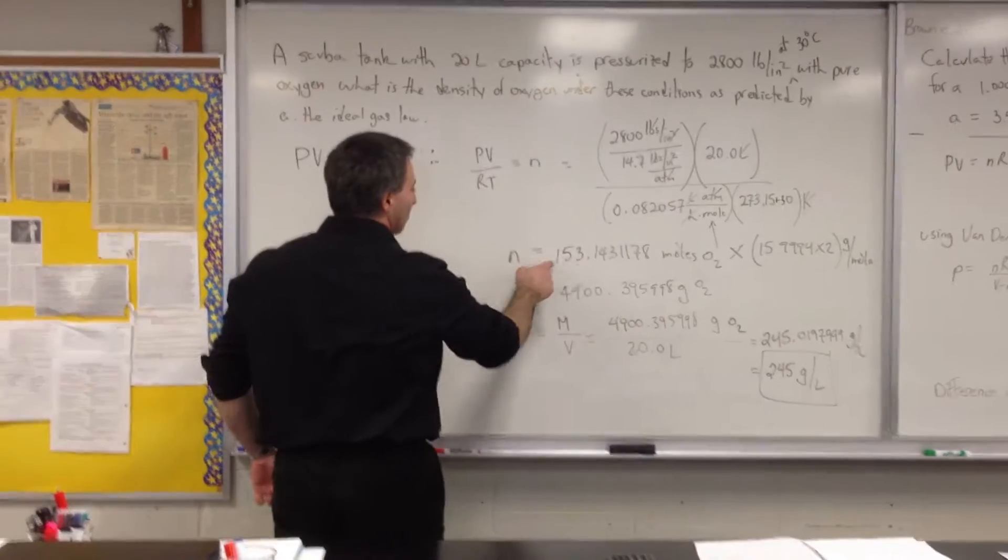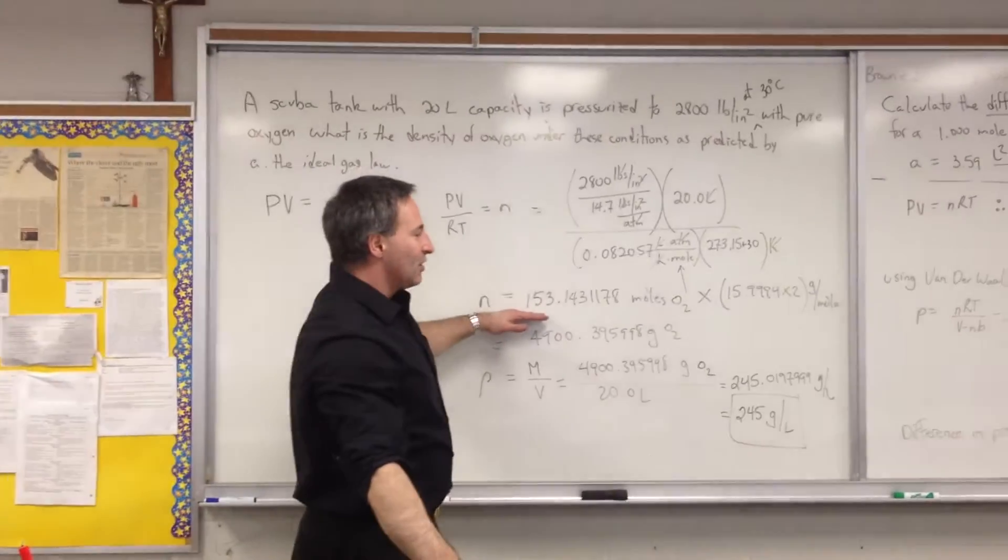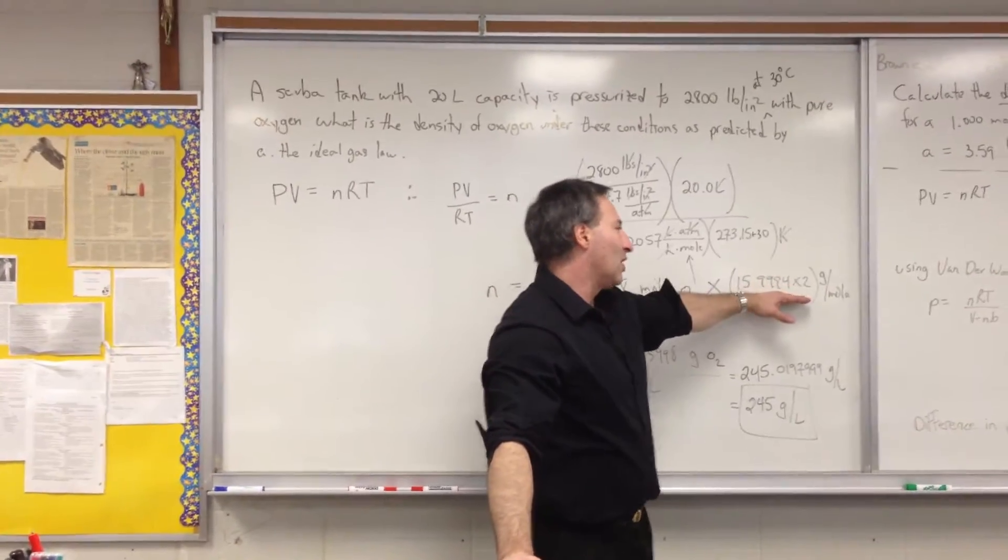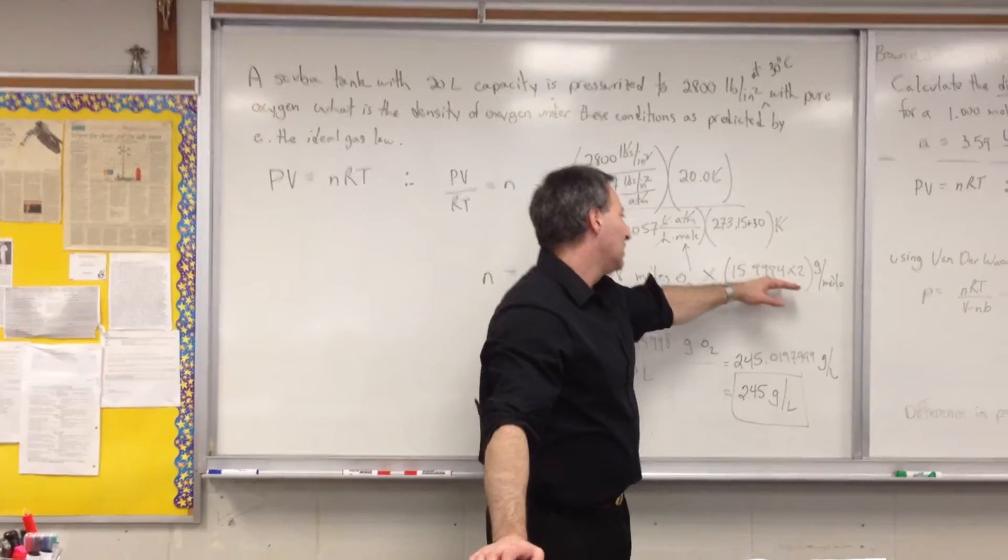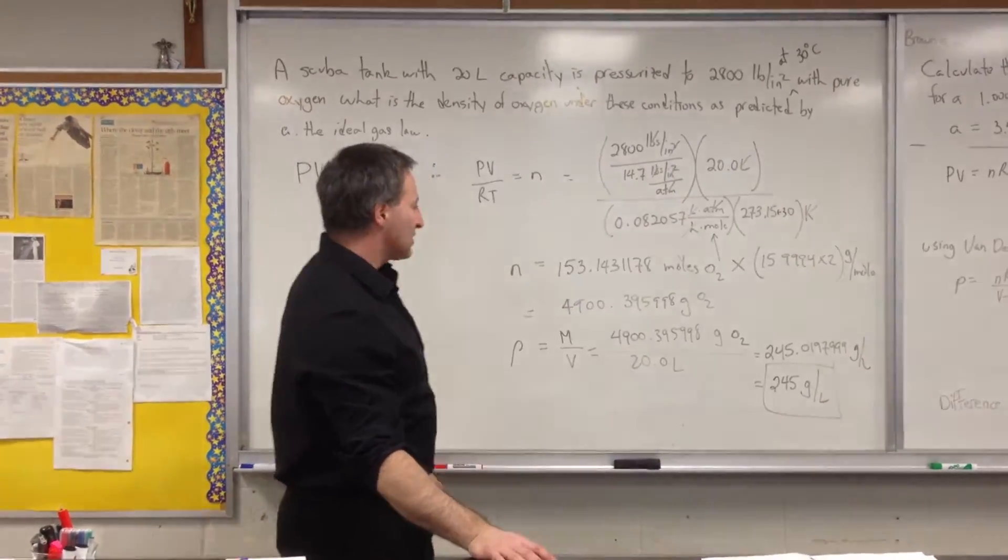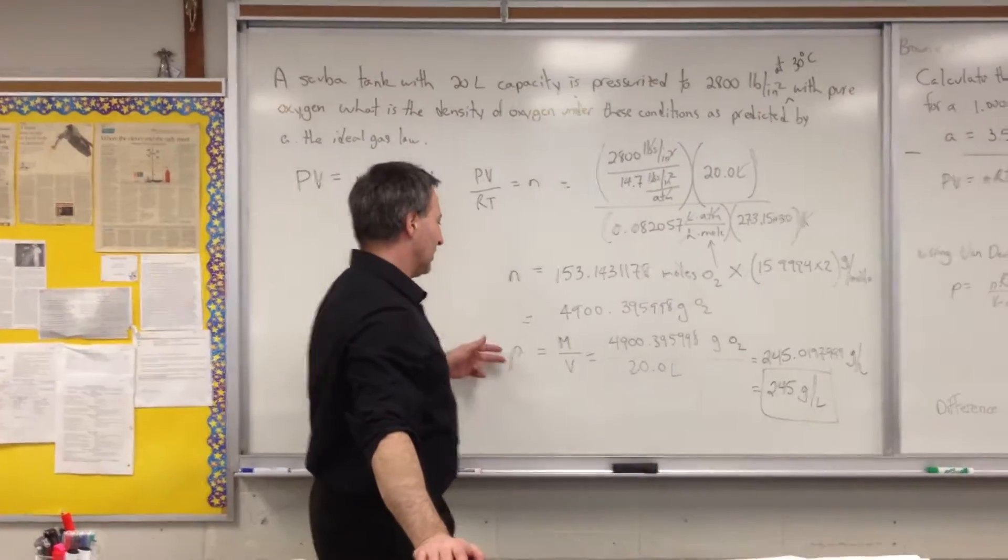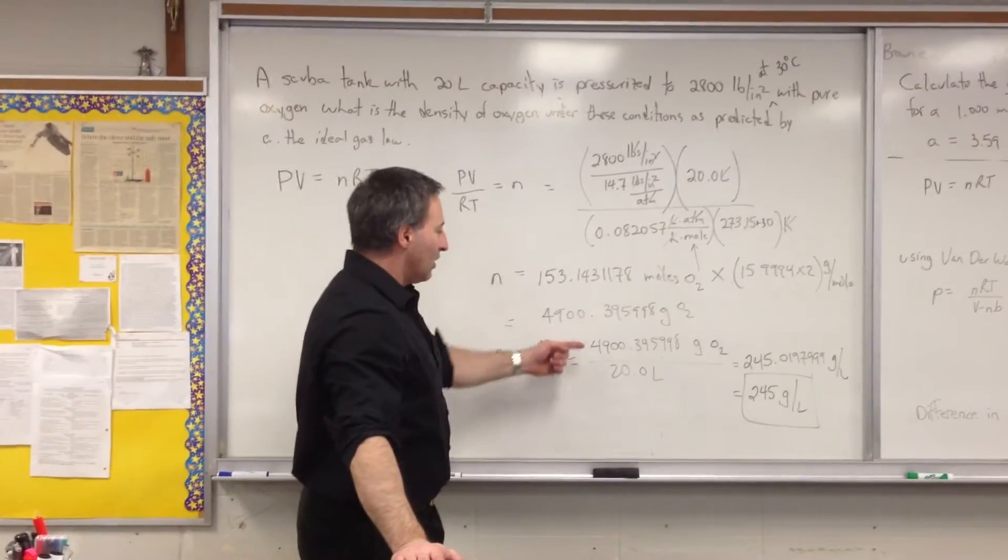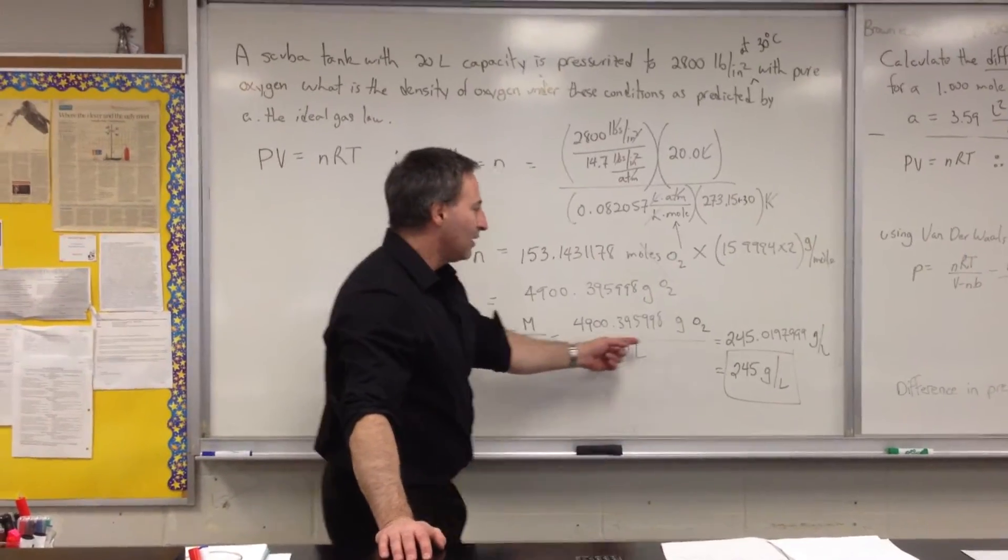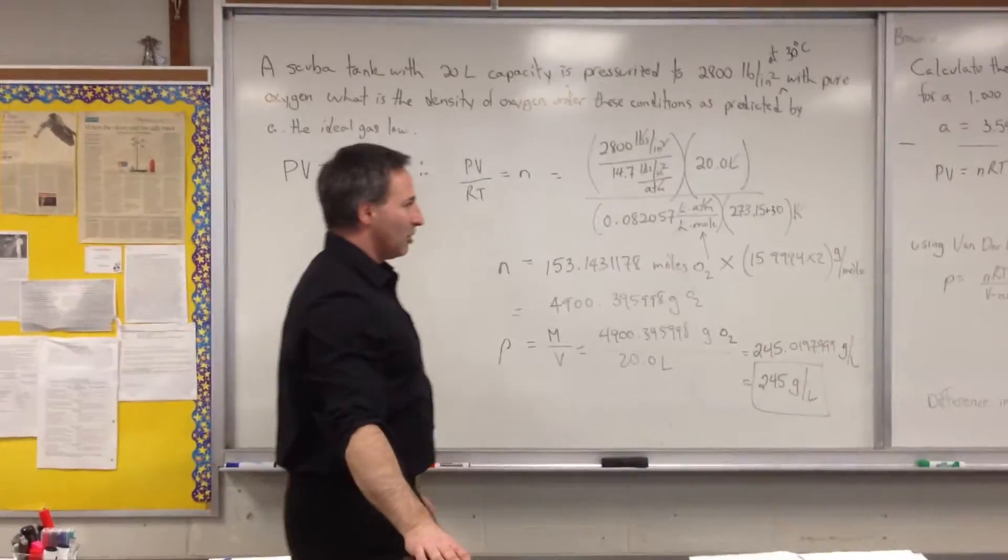At any rate, the value of the number of moles that you get is 153. When you find that you have 153 moles of oxygen, you multiply by the molar mass of oxygen. Don't forget, oxygen is a diatomic gas. And moles times grams per mole cancels, giving you grams. You have 4,900 grams of oxygen. And then you enter it into the calculation for density. Density equals mass over volume. 4,900 grams of oxygen contained within a 20-liter tank. 245 grams per liter is the density of the oxygen under that pressure.